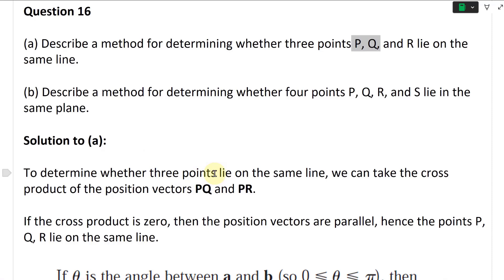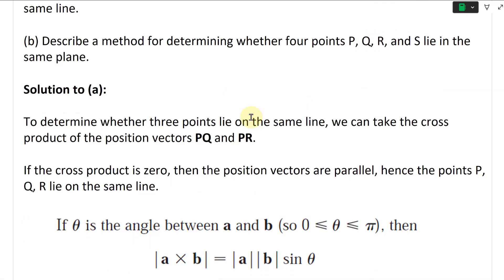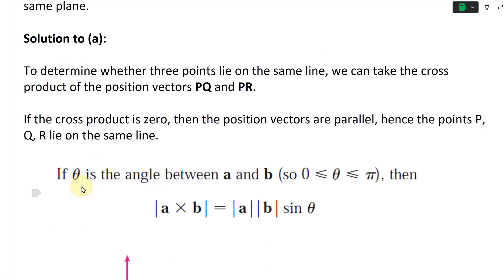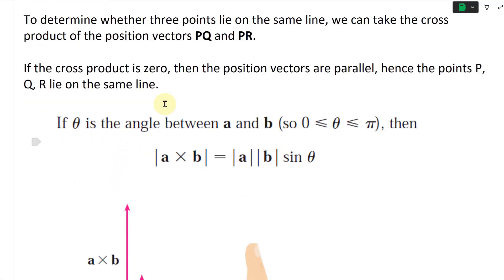To determine whether three points lie on the same line, we could take the cross product of the position vectors PQ and PR. If you take the cross product of them, if the cross product is zero, then the position vectors are parallel, hence the points P, Q, and R lie on the same line.